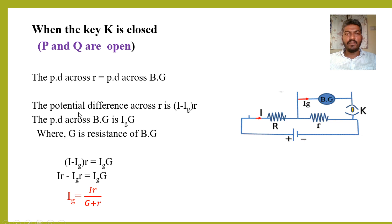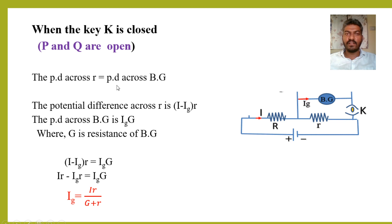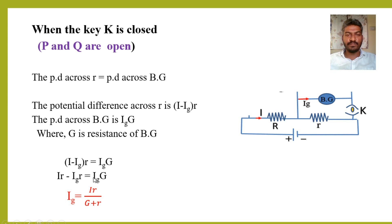If IG is the current flowing through the BG, then the remaining current through small r is I minus IG. We can write the potential difference across small r as (I − IG)·r, and the potential difference across the BG is IG·G, where capital G is the resistance of the ballistic galvanometer. Setting these equal: (I − IG)·r = IG·G. Simplifying, IR − IG·r = IG·G, which gives IG = IR / (G + r).